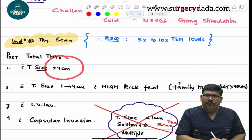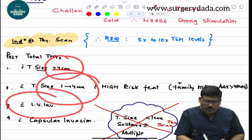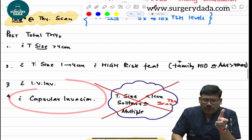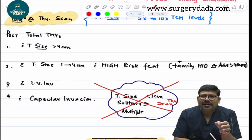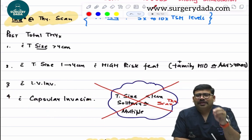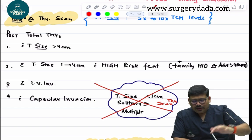When do we go for thyroid scan? Total thyroidectomy with size more than 4cm or 1 to 4 centimeters with lymphovascular invasion or with capsular invasion. When we don't go: lesions less than 1 centimeter, single or multiple.